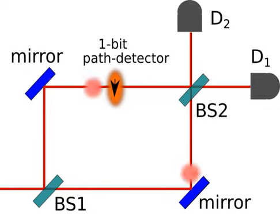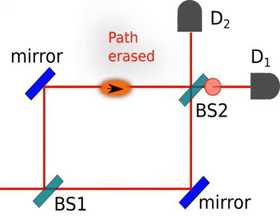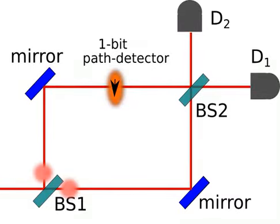The two paths are correlated to two different Z states of the path detector. Alternately, one may choose to read out the X states of the path detector.